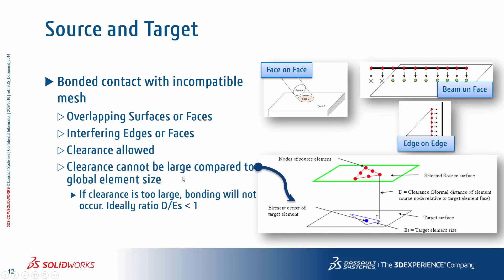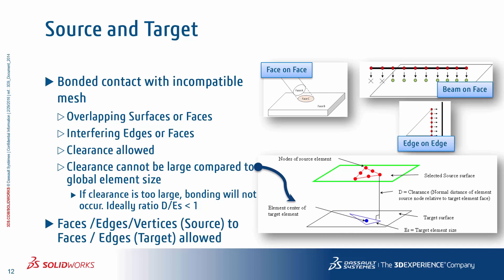The same scenario holds true when projecting a beam onto an edge or a shell edge onto another shell edge. When you have a clearance, that clearance cannot be large compared to the global element size. There is a general guideline where the ratio of the clearance to the element size on the target selected face should be less than one; otherwise, the bonded condition will not happen. For the source selection you can select faces, edges, and vertices; for the target, only faces and edges are allowed with the bonded contact incompatible setting.